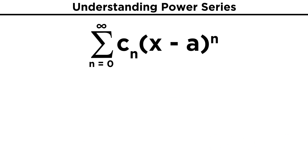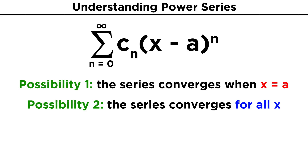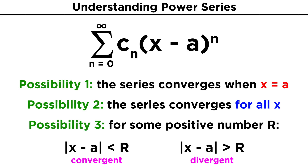In general, there is a theorem that summarizes the three possibilities that can describe a power series in this form, depending on the precise series. One possibility is that the series converges only when x equals A. A second possibility is that the series converges for any value of x. And lastly, there could be some positive number R such that if the absolute value of x minus A is less than R the series will converge, and if greater than R the series will diverge, just like the example we just completed.